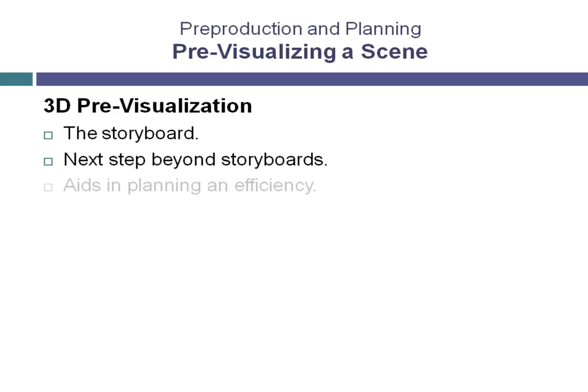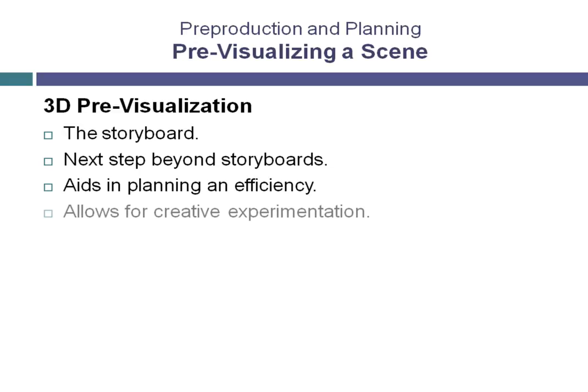Like storyboards, previsualization can be a tremendous help in planning a production as efficiently as possible, allowing the director to plan each camera move, set up the sequence timing, and prepare for shooting with real cameras by establishing lens, track, and jib parameters ahead of time. It also allows for an added level of creative experimentation that location shooting does not — say nothing about the cost of experimenting on the set of a live production.